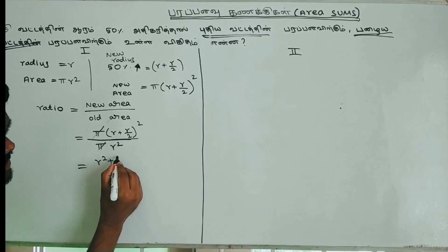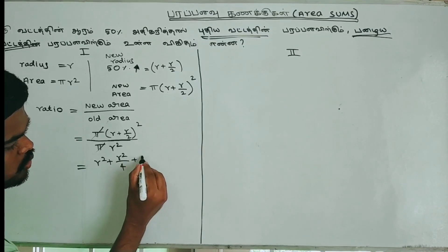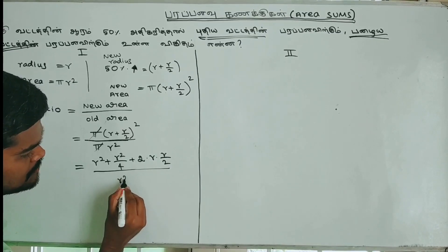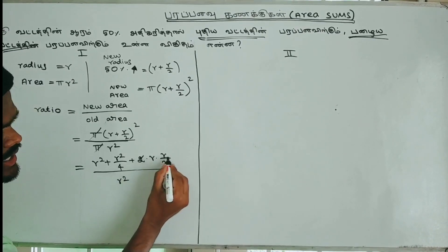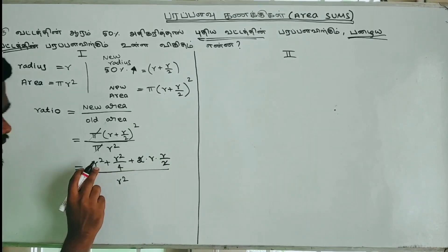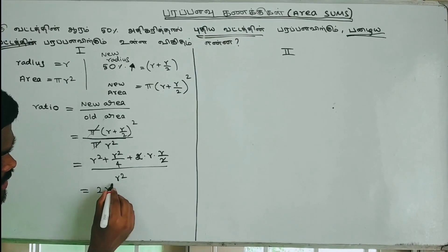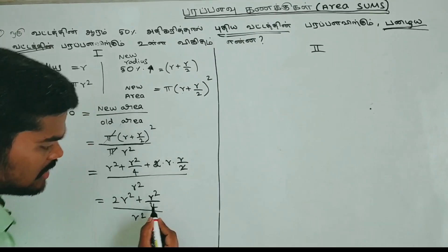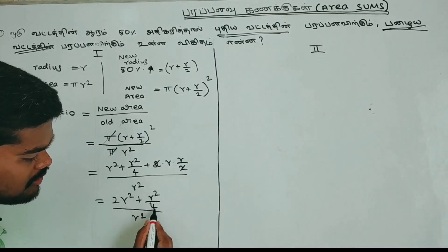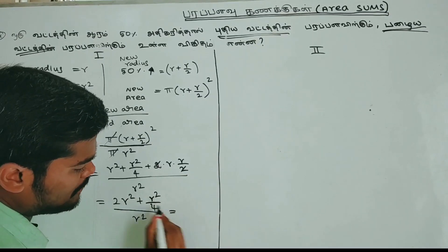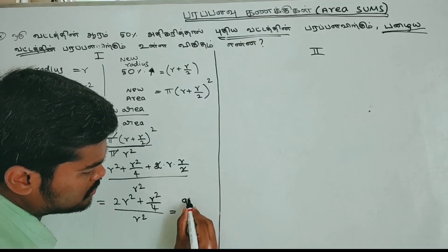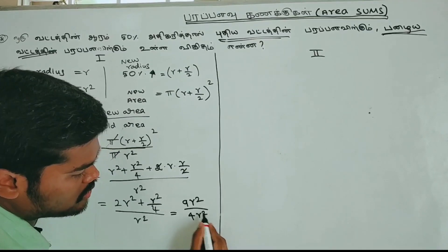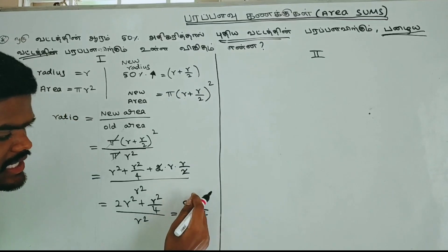Pi cancels. We expand (r + r/2) squared using (a + b)² = a² + 2ab + b². That gives r² + r²/4 + 2·r·(r/2), divided by r². Simplifying: 2r and 2 cancel, and r·r = r² is already there. So we have r² + 2r² + r²/4, divided by r².